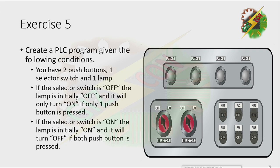Exercise 5: Create a PLC program given the following conditions. You have two push buttons, one selector switch, and one lamp. If the selector switch is off, the lamp is initially off and will turn on only if one push button is pressed. If the selector switch is on, the lamp is initially on and will turn off if both push buttons are pressed.